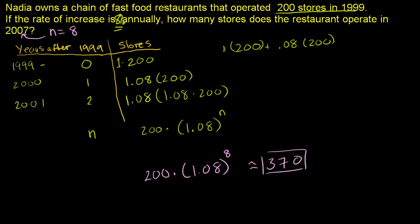So 8% growth might not look like something that's so fast or that exciting. But in under a decade, in only eight years, she would have gotten her restaurant chain from 200 to 370 restaurants. So you see that the compounding growth by 8% actually ends up being quite dramatic.